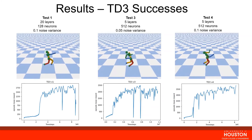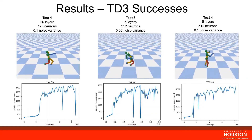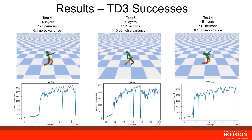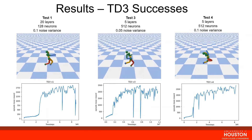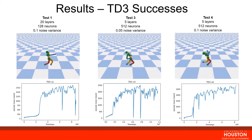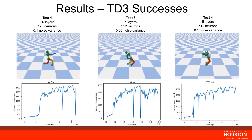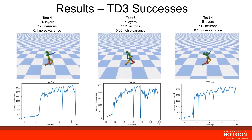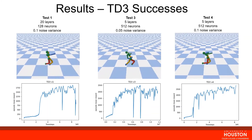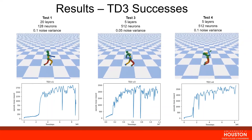Here we show the results of the three successful TD3 tests, all using the relu activation function, with the robot agent continuing to walk forward without falling over. The main difference in performance is walking speed — test one is slowest and test four is the fastest and best performer. Test one has a deeper network with 20 layers and 128 neurons, while tests three and four have 5 layers with 512 neurons and are the better performers. We can gather that a deeper network is not necessarily beneficial, but rather a wider network is more beneficial in this case.